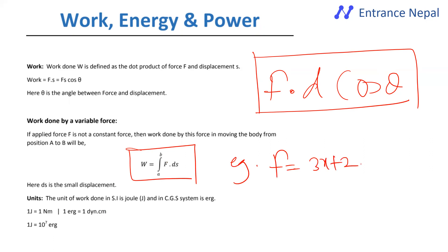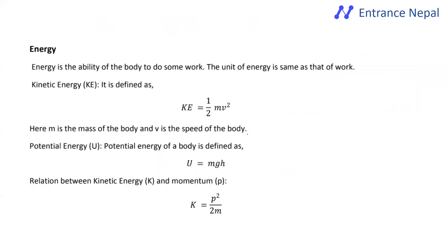For example, if force is given as 3x + 2, you integrate to find work done over a displacement. Energy is the ability or capacity to do work. It includes potential energy and kinetic energy, where kinetic energy = ½mv².